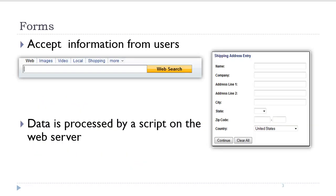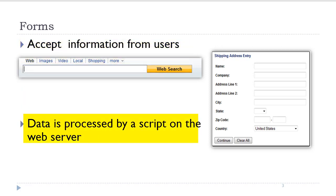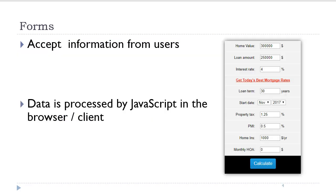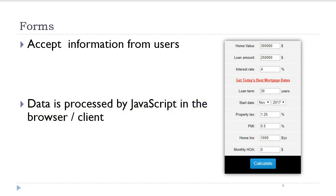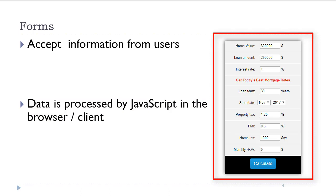HTML forms are designed to accept information from the user. Typically, the user will enter information, click a button, that information is sent to a script on the server, and processed somehow. Forms can also be processed with JavaScript in the browser. For example, a calculator would not need to send data to the server.